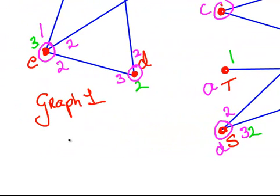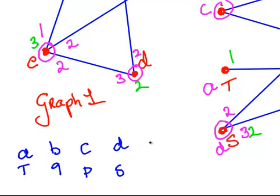So the isomorphism is as follows: A corresponds to T, B corresponds to Q, C corresponds to P, D corresponds to S, and E corresponds to R.